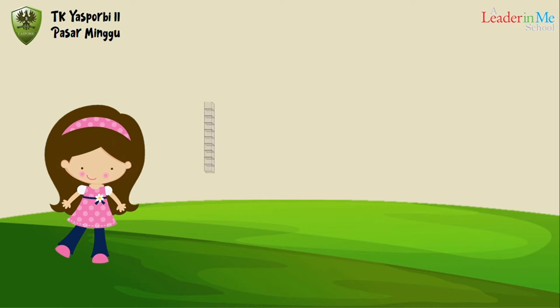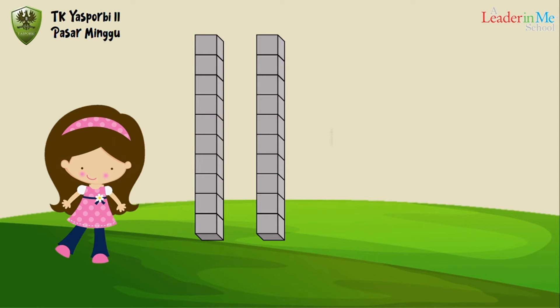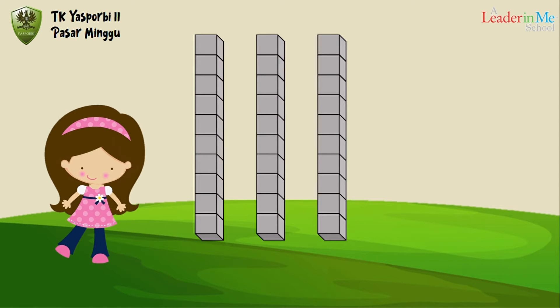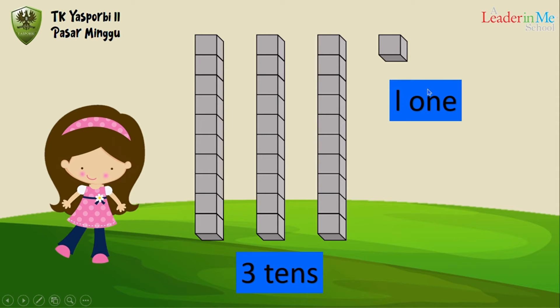How many tens in here? Let's count: one, two, three — three tens. And how many ones? Only one. Three tens and one one means thirty-one.